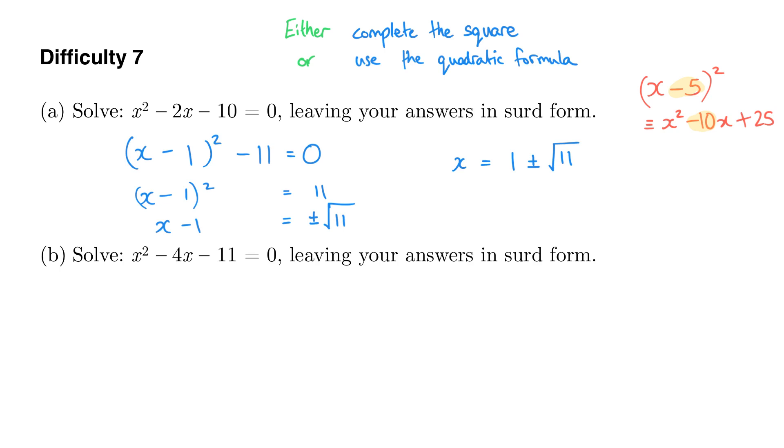Let's look at question B. As I said, I'm going to solve this one using the quadratic formula rather than using completing the square. Now, if you've got a quadratic equation of this form, ax squared plus bx plus c equals 0, then x is going to equal negative b plus or minus the square root of b squared minus 4ac all over 2a.